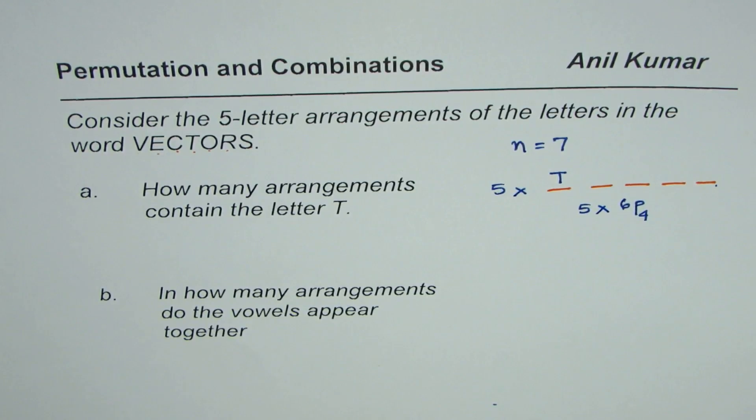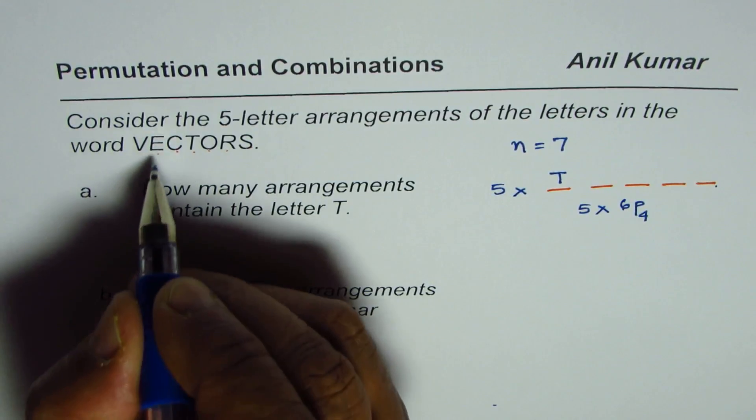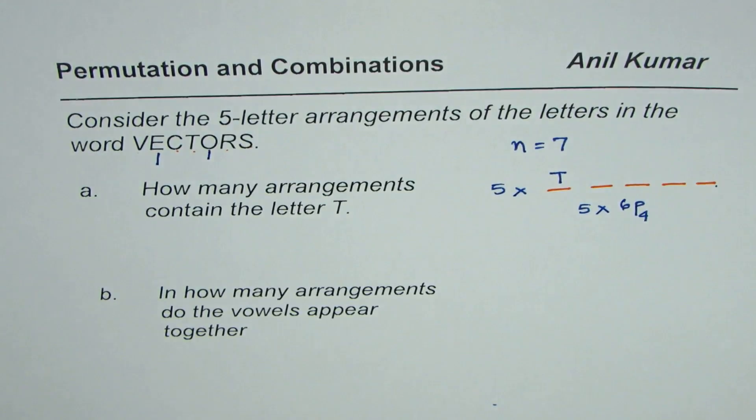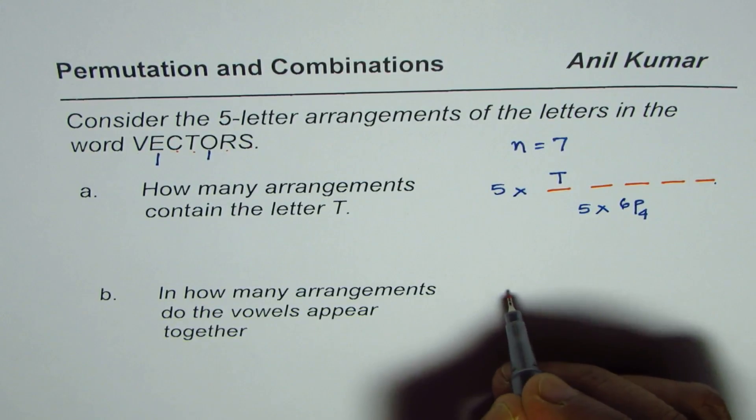Now let's move on to the next one. In how many arrangements do the vowels appear together? How many vowels are there? E and O. There are two vowels. So basically we have to place E and O together.